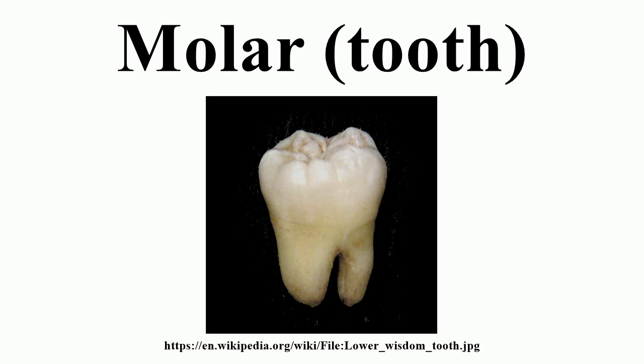The human mouth contains upper and lower molars: the maxillary first molar, maxillary second molar, maxillary third molar, mandibular first molar, mandibular second molar, and mandibular third molar.